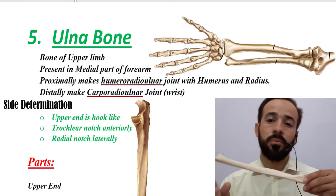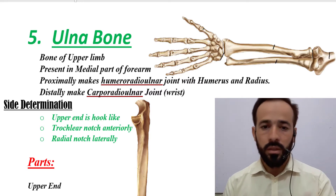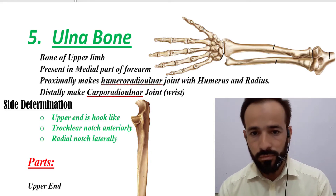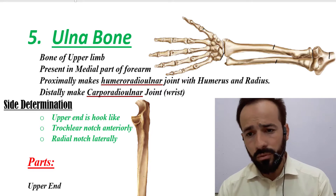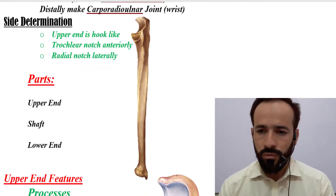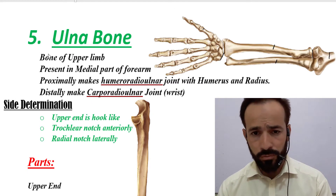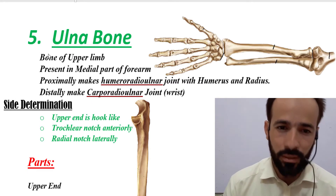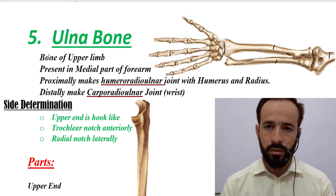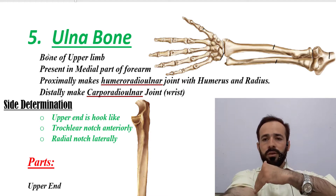This hook-like shaped bone is called the ulna bone — the fifth bone of the upper limb. The ulna bone is mostly present in the medial compartment of the upper limb. It is the bone of the upper limb, and it is present in the medial part of the forearm, because the radius is present in the lateral part.